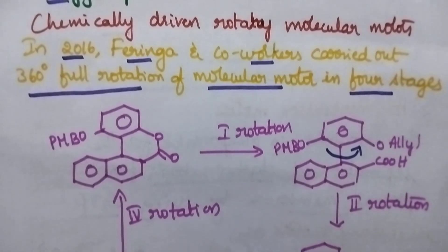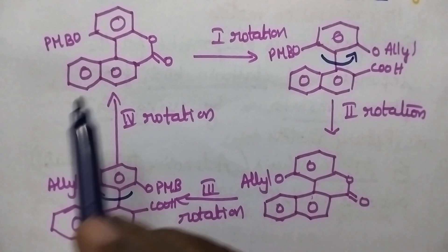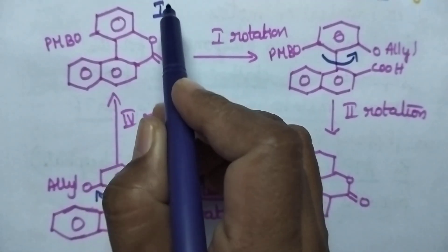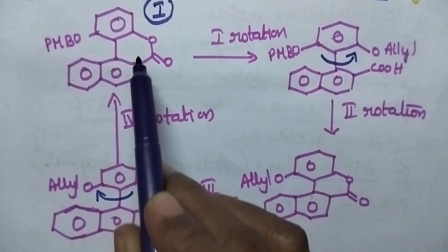Initially, the molecule has structure one. In the first step, it is slightly rotated so that the alkyl group and acid group will be present on the front side of the paper.